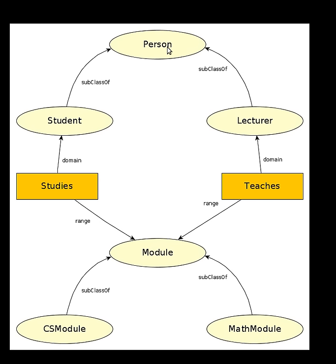Basically, the two main classes are Person and Module. From class Person, as you can see, we have subclasses Student and Lecturer. From class Module, we have subclasses Math Module and CS Module.